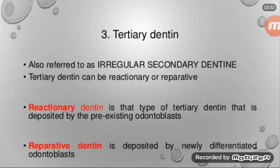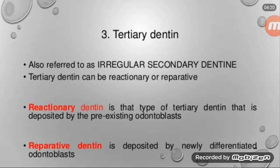Number three, tertiary dentine. This is also referred to as irregular secondary dentine. Tertiary dentine can be reactionary or reparative. Reactionary dentine is deposited by pre-existing odontoblasts, and reparative dentine is deposited by newly differentiated odontoblasts.